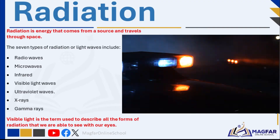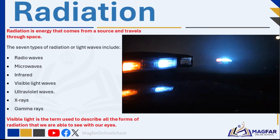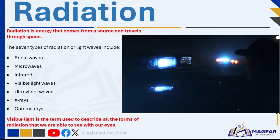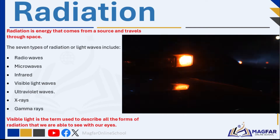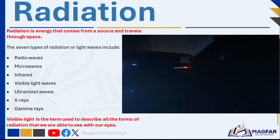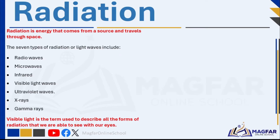Some animals can see other light waves. For example, butterflies, bees, and some birds can see ultraviolet light. A flower that looks quite plain to us may seem way more colorful to a bee. Some snakes have the ability to see infrared, meaning that they can see warm objects such as mice scurrying in the grass, allowing them to catch prey more easily.